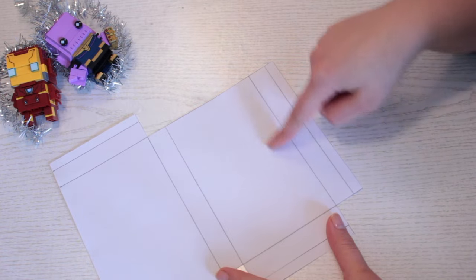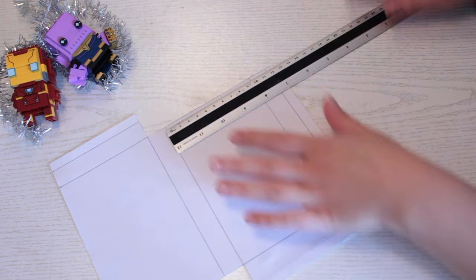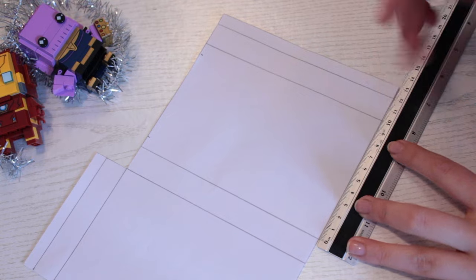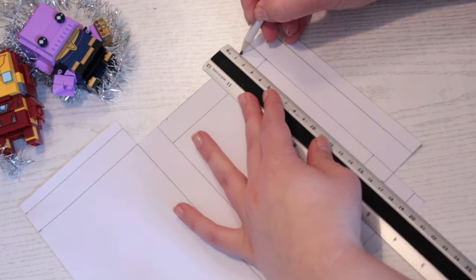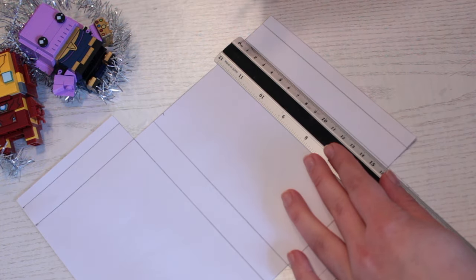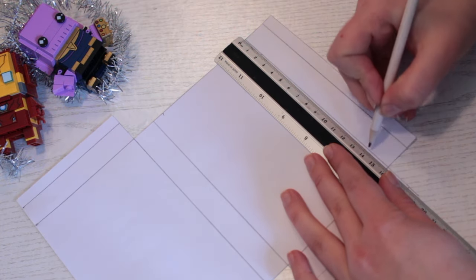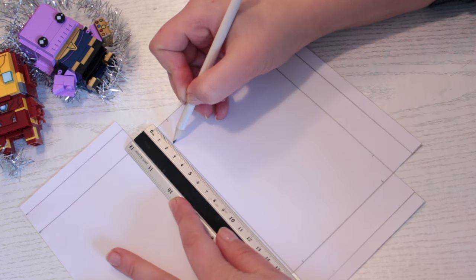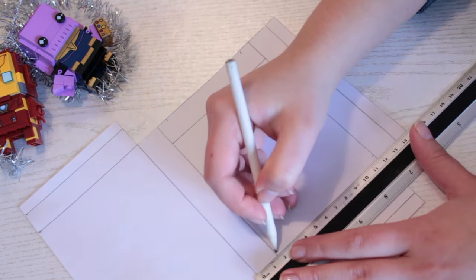We also need to create a little window here. Take your ruler and measure 1 cm inwards from the top and bottom sides, and make lines between the markings. Then measure 2 cm inwards on each end of the long side. Do the same on the opposite side and make lines between the markings.